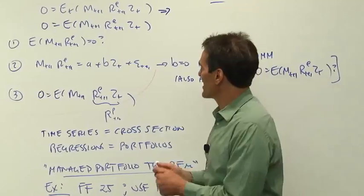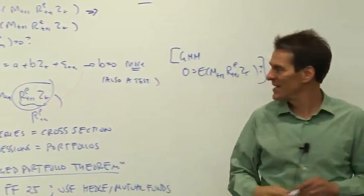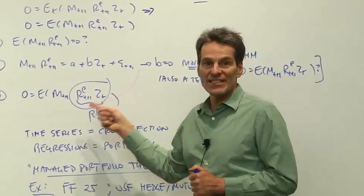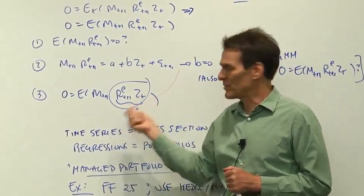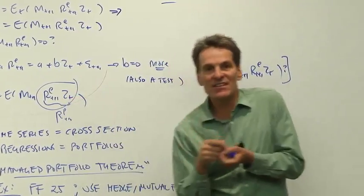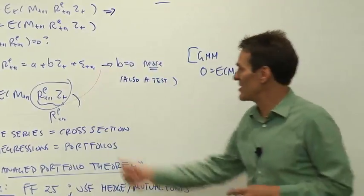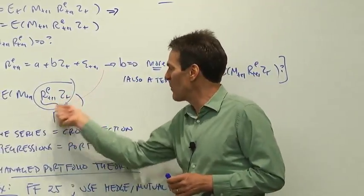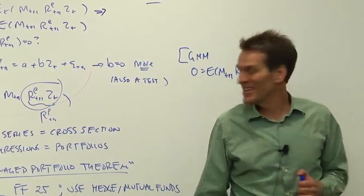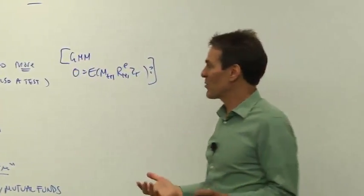But we can also unite R_e times z. Now, R_e times z is a return itself. It's a managed portfolio return. What does a hedge fund do other than look at some signal z and invest more or less in an excess return strategy according to that signal z and then report the return to its investors? So an instrumental variable is the same thing as a managed portfolio return.